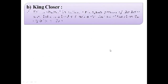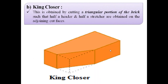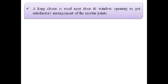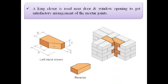The second type of closure is king closure. King closure is obtained by cutting a triangular portion of the brick such that half a header and half a stretcher are obtained on the adjoining cut faces. A king closure is used near door and window openings to get a satisfactory arrangement of the mortar joint. In this image you can see where the king closure is provided.